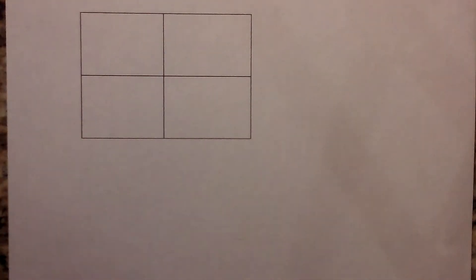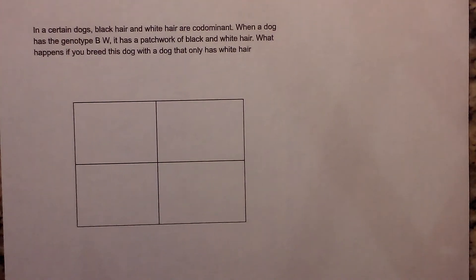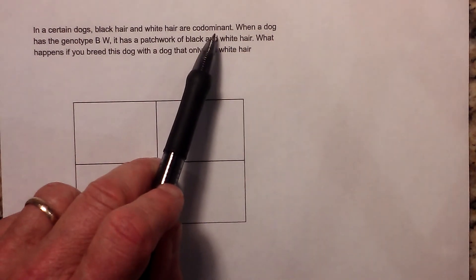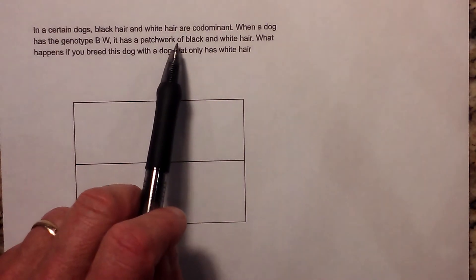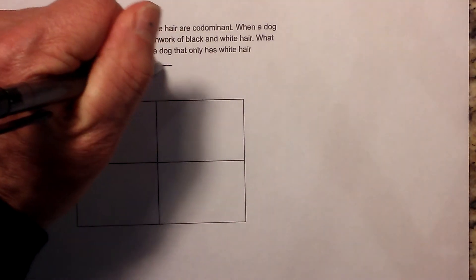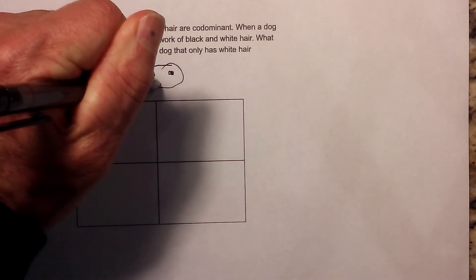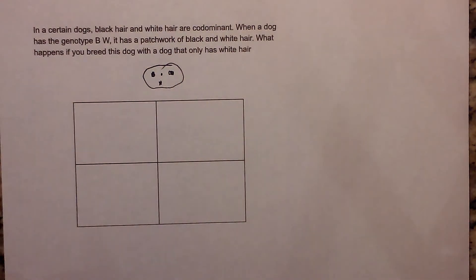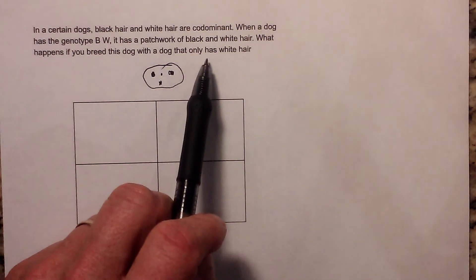Now let's look at codominance, and it's very similar. In certain dogs, black hair and white hair are codominant. When a dog has a genotype BW, it has a patchwork of black and white hair. What happens if you breed a dog that only has white hair?